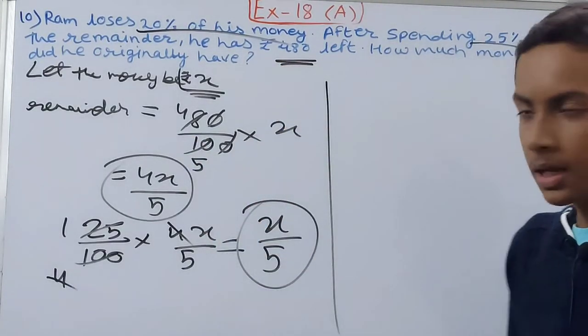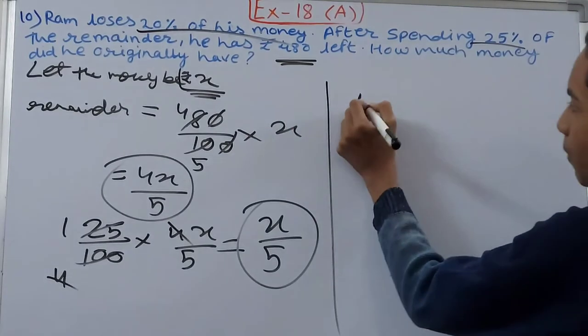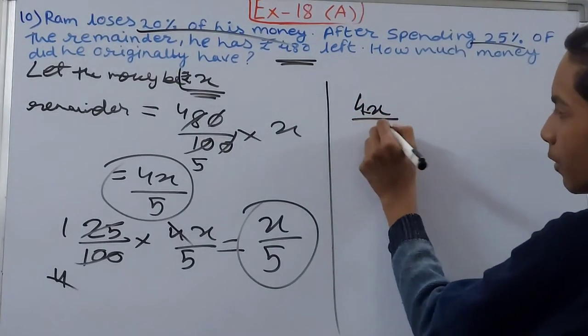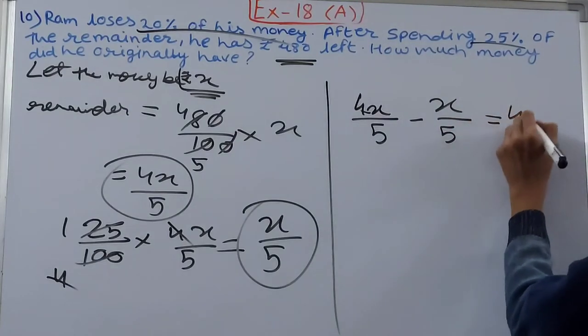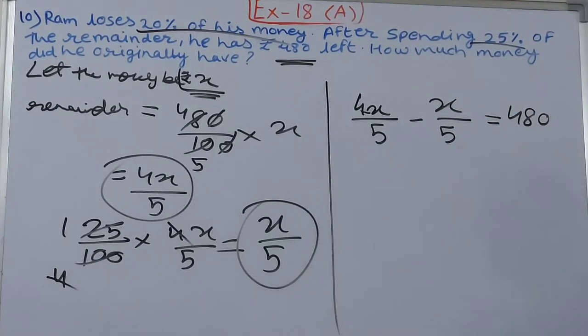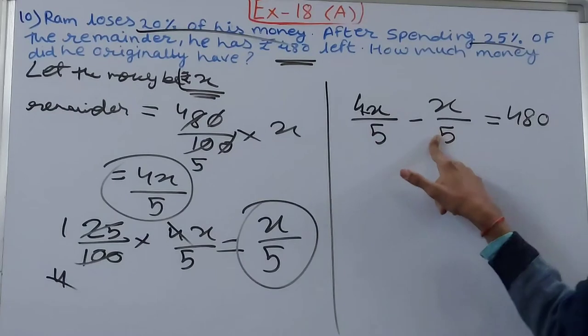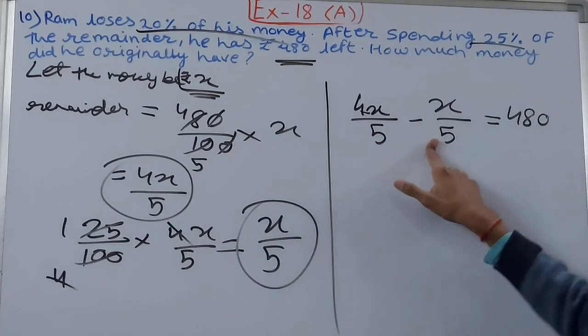After spending this much from the remainder, he was left with rupees 480. So can we frame it like this: 4x upon 5 minus x upon 5 equals 480. This is the remainder and this is the money he spent.